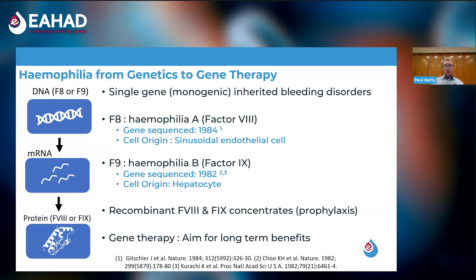We have a good understanding of the genetics of both disorders, with both genes sequenced in the early 1980s. These advances in genetics resulted in direct translational relevance, with the ability to produce recombinant factor 8 and factor 9 concentrates used for the purpose of prophylaxis. This therapy has transformed care for individuals with haemophilia. However, these infusions require regular intravenous replacement and do not provide a long-term solution, carrying a significant burden of care.